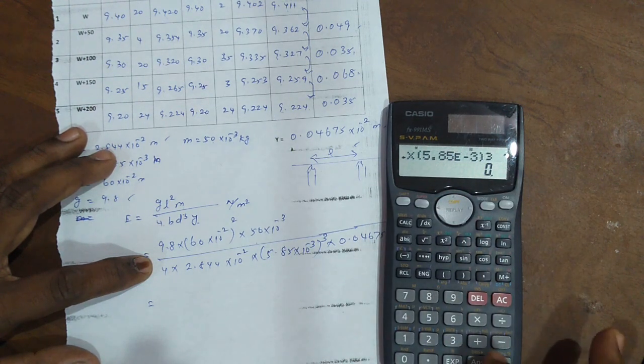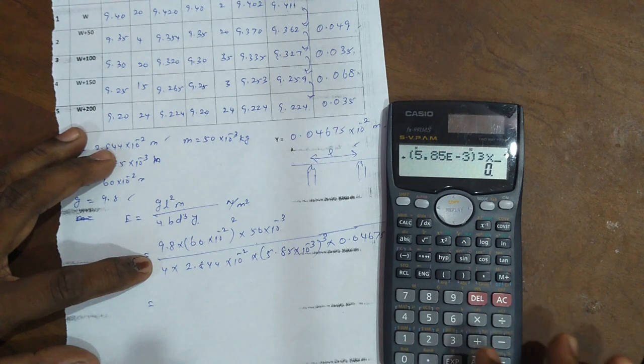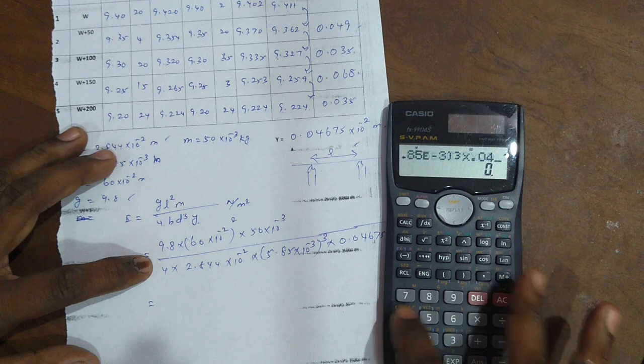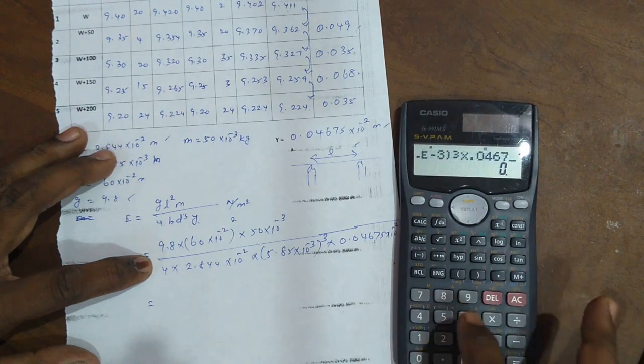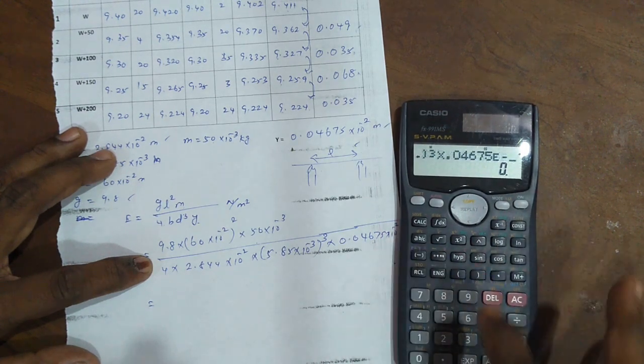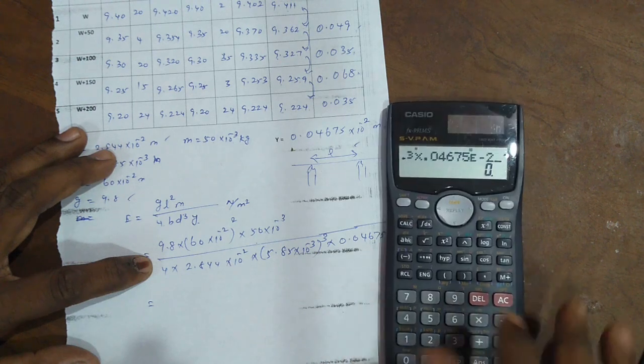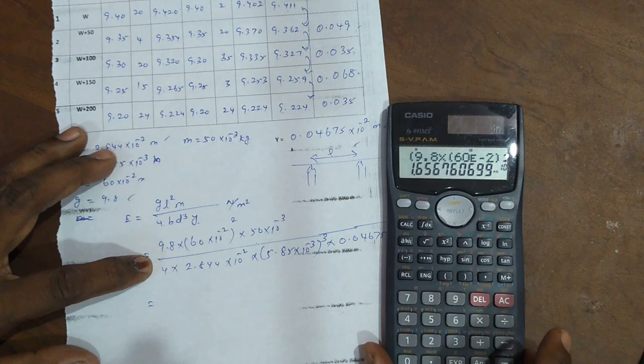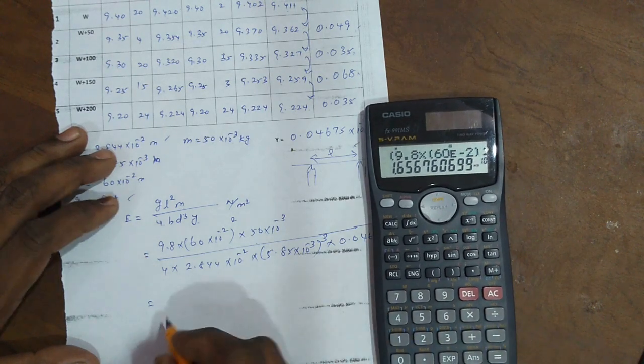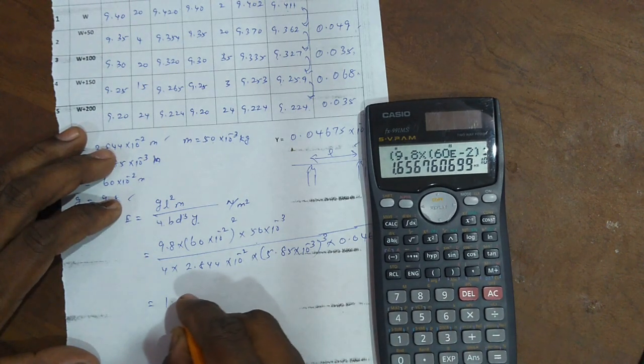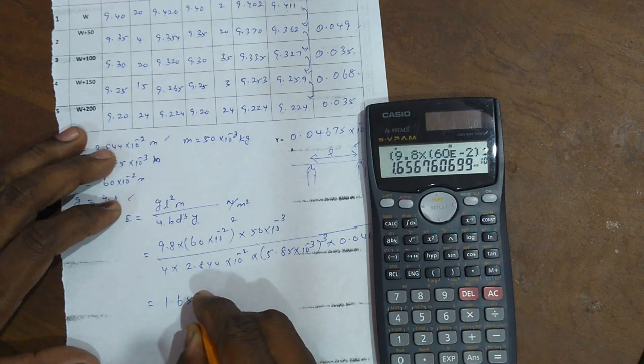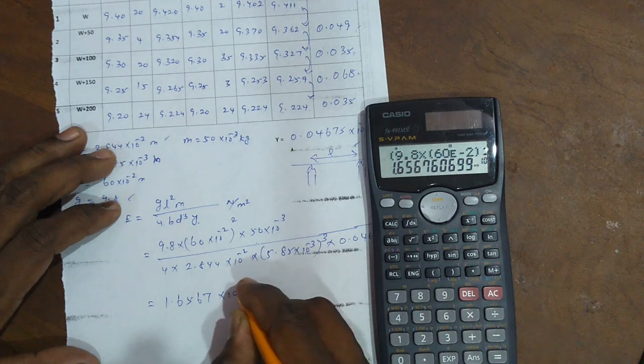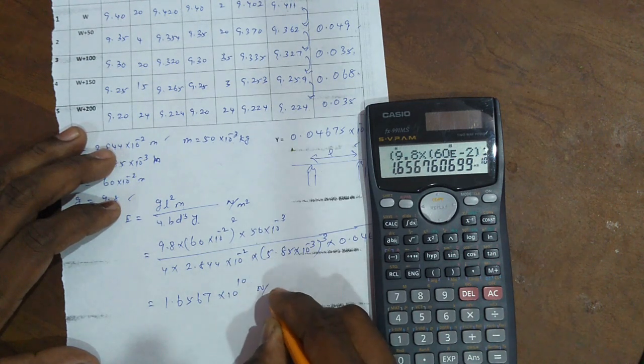Whole cubed into y, 0.04675, exponent minus 2. The final form, close the bracket. The answer is 1.6567 into 10 to the power of plus 10 Newton by meter squared.